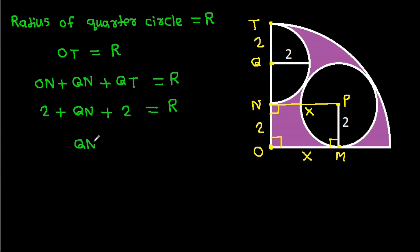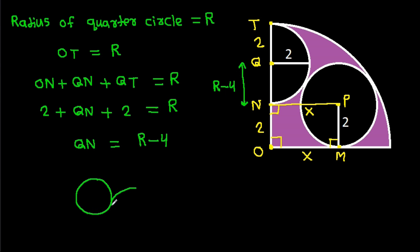So QN will be R minus 4. Now if we have two touching circles with centers P and Q, and we join PQ, then it will pass through their common point of contact, suppose S. PS is radius = 2, and QS is radius = 2, so PQ = 4.